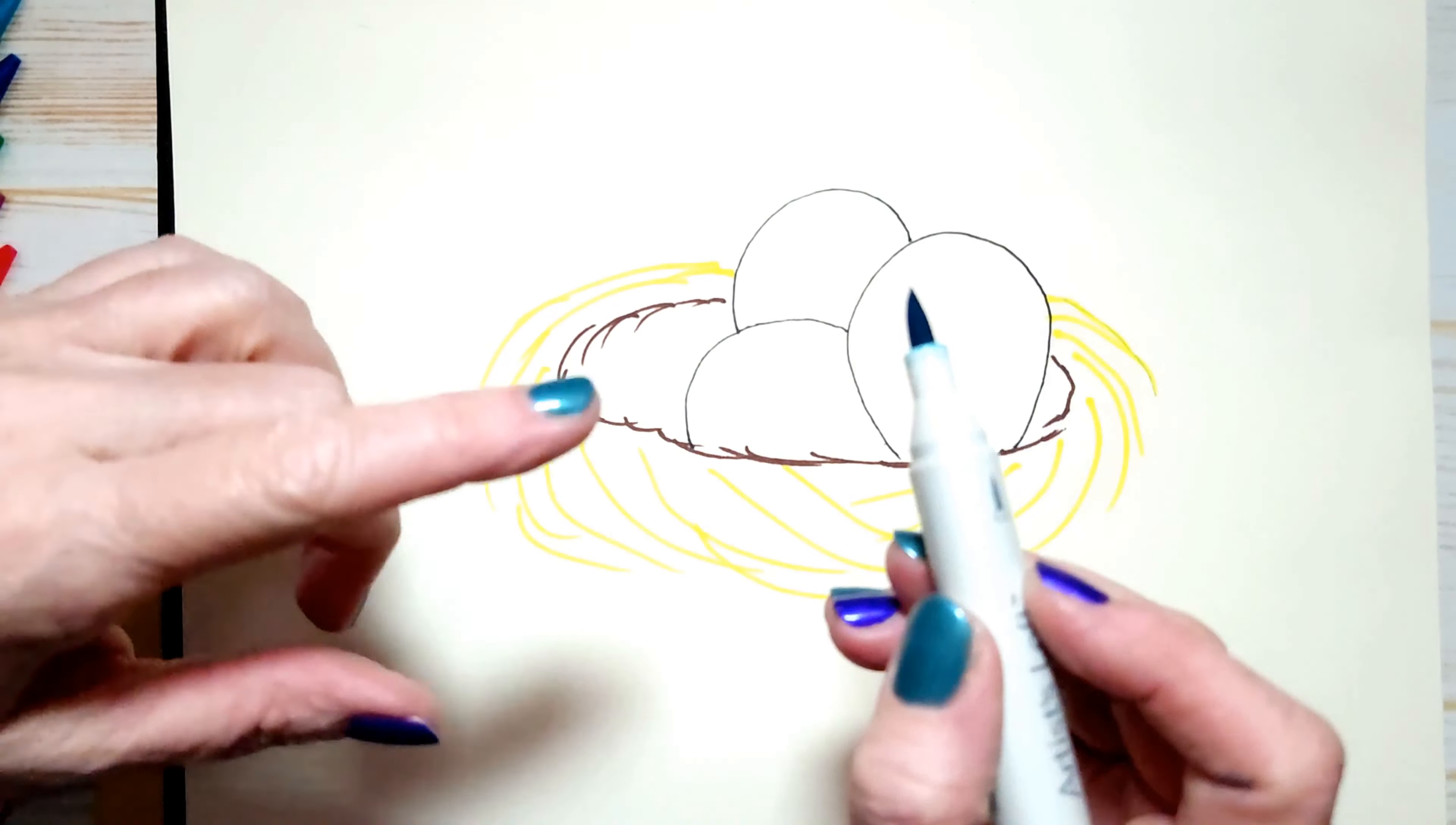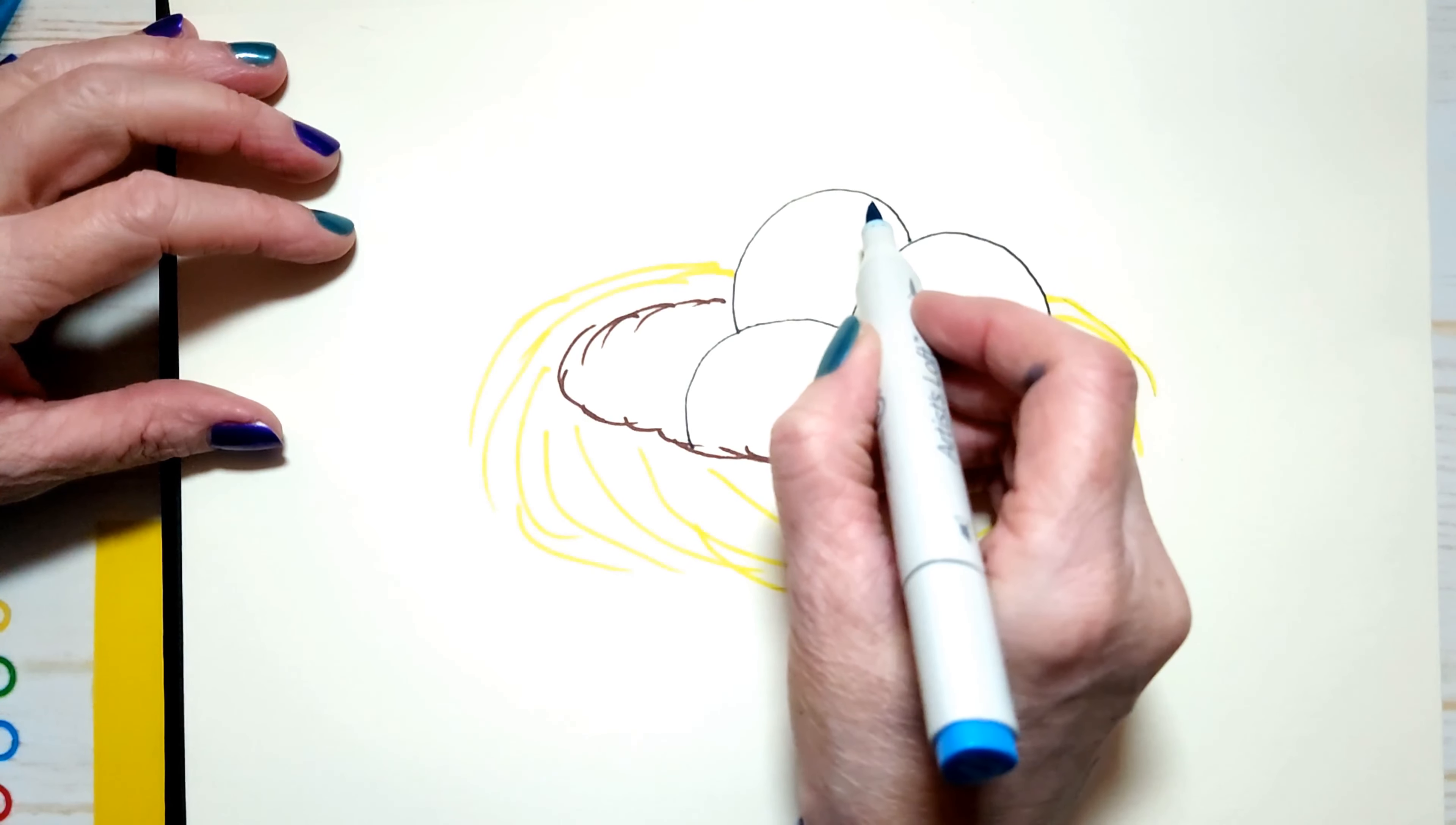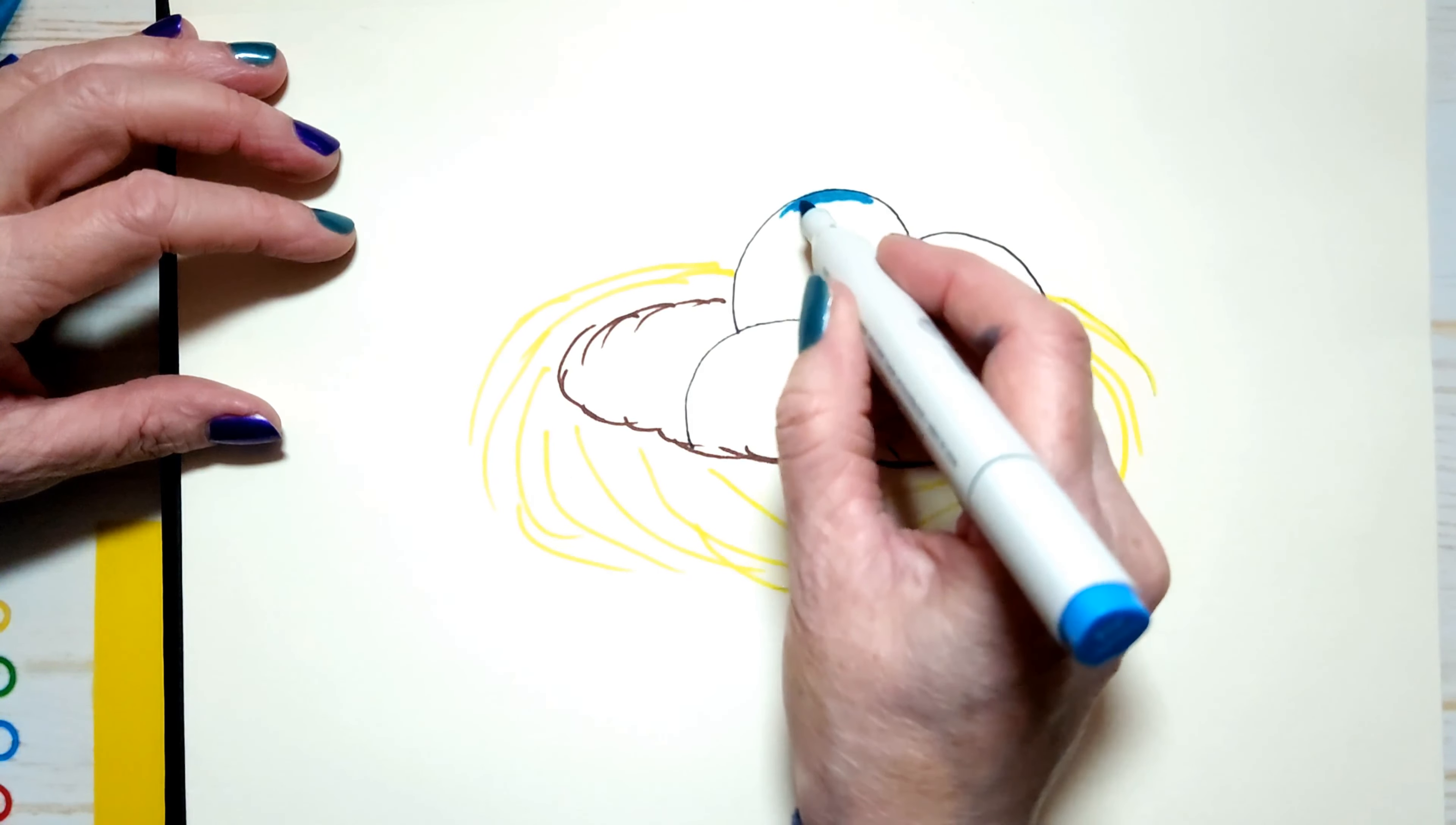It's like a paintbrush at the tip. I really love this marker. So what we're going to do is we're just going to color in the egg. All three eggs. We're going to color those in blue.